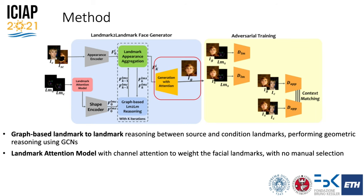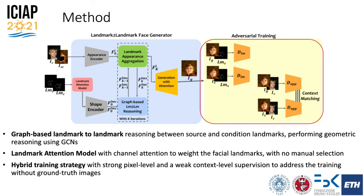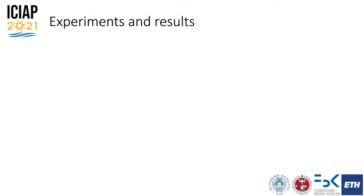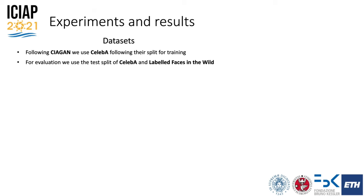Two discriminators ensure pose preservation from the source and appearance from the condition. Context matching loss ensures preservation of non-personal attributes from the source, such as background and lighting. Following previous works, we test our method on CelebA and Labeled Faces in the Wild, two publicly available face datasets.